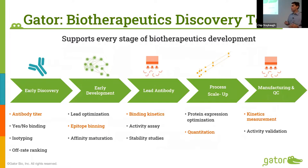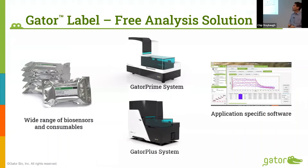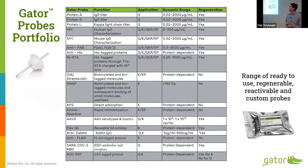In the biotherapeutics discovery pipeline, Gator is being used at every aspect — from early discovery, where people are doing antibody titer, all the way through manufacturing and QC where you're running kinetic measurements. Our label-free Gator system includes a robust list of biosensors and consumables. We have the Gator Prime and Gator Plus instruments with application-specific software. Current probe offerings include protein A, protein G for quantitation, nickel NTA, streptavidin, and a small molecule and peptide probe, which is a highly dense streptavidin probe.